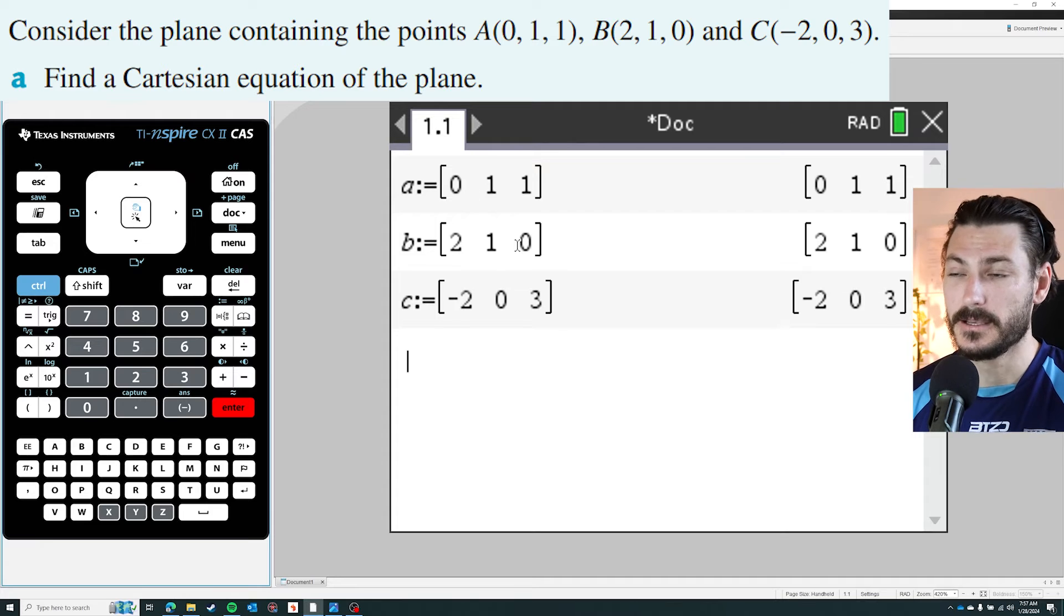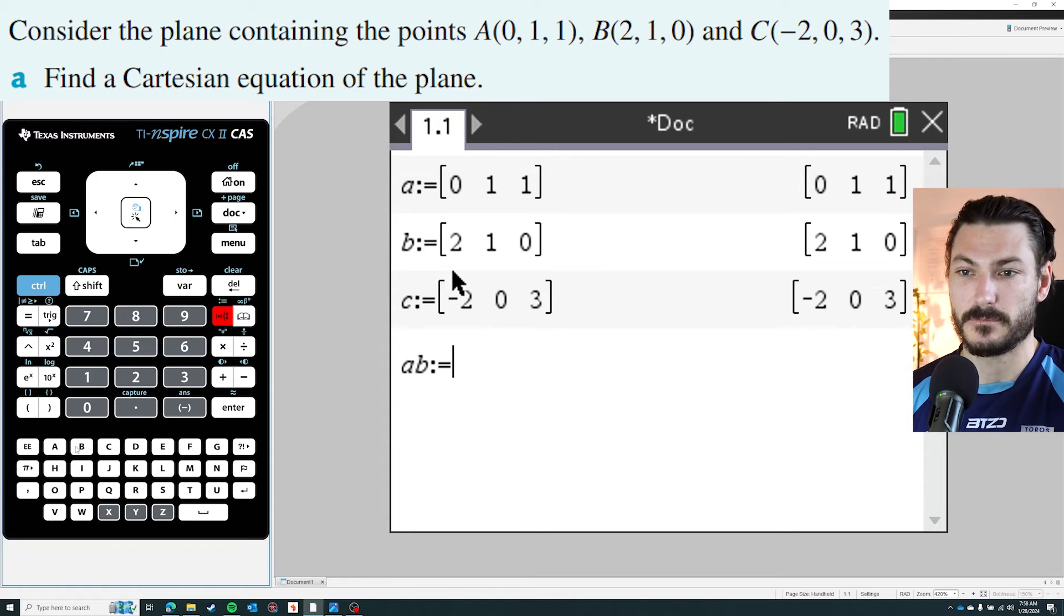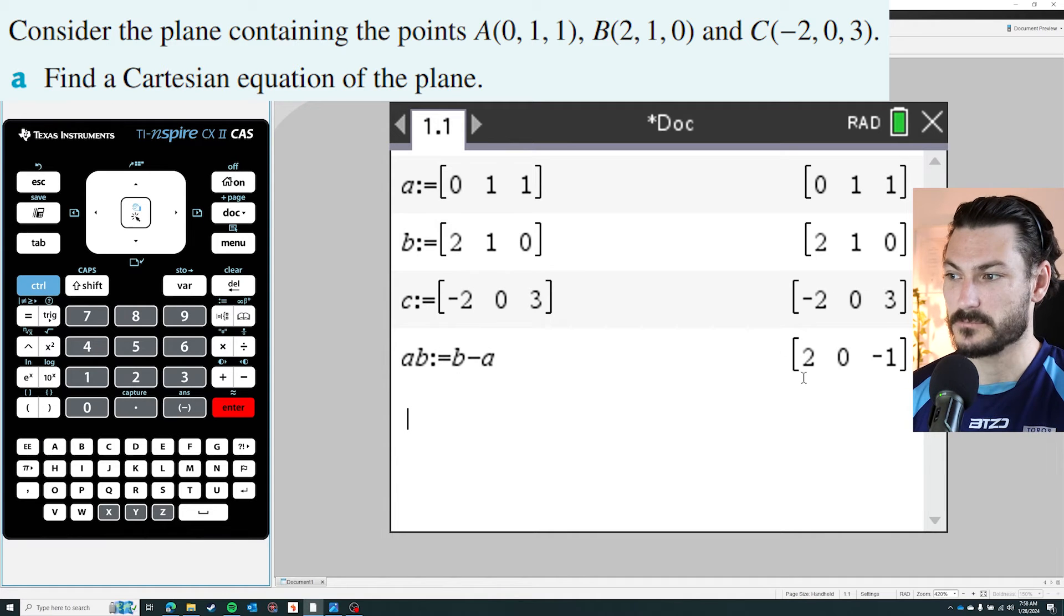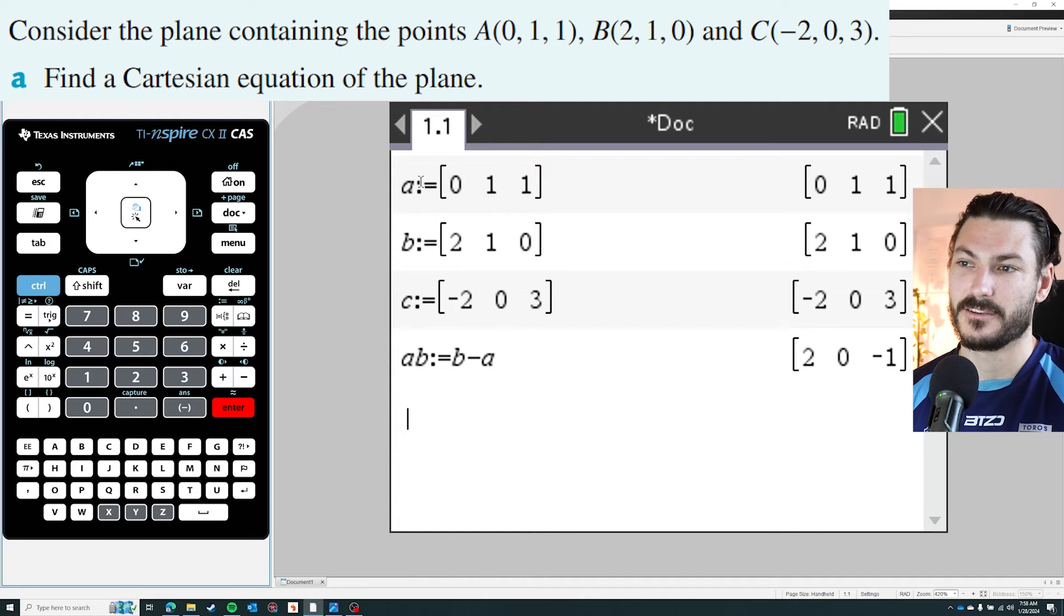So to get A to B, that's the same as b minus a. So now I'm going to define AB as the vector b minus the vector a, and there's my vector there. It really is as simple as that on the calculator, and it's also why I recommend you go ahead and define all of the vectors.